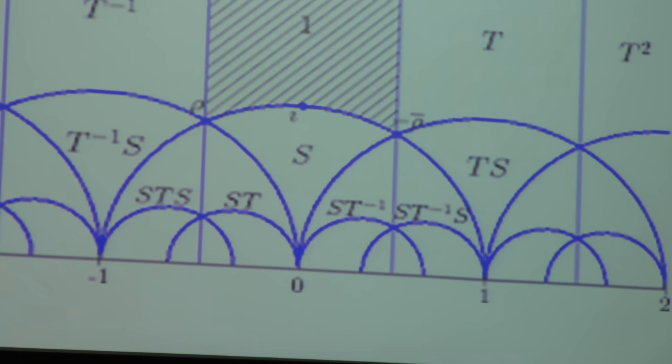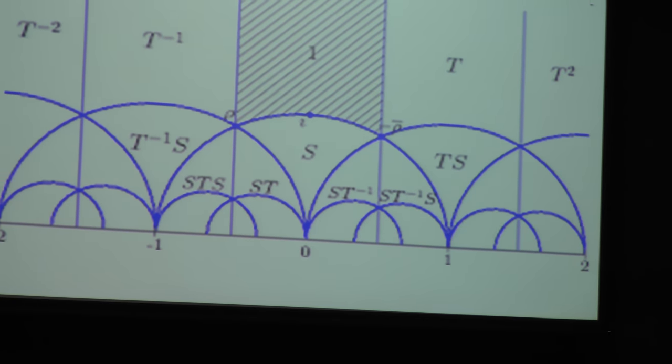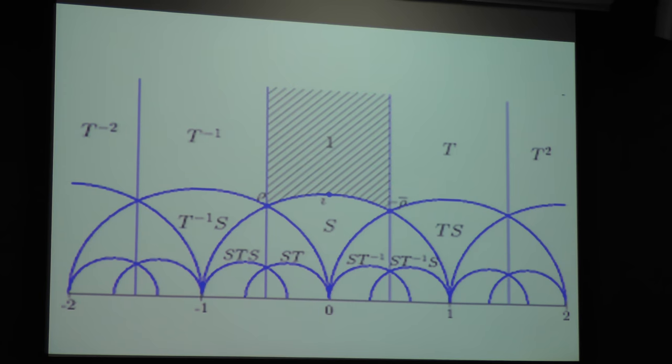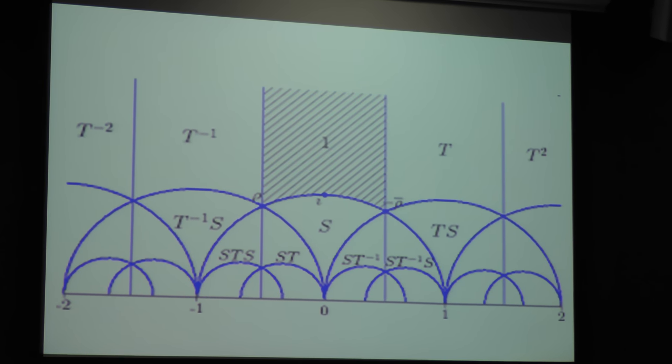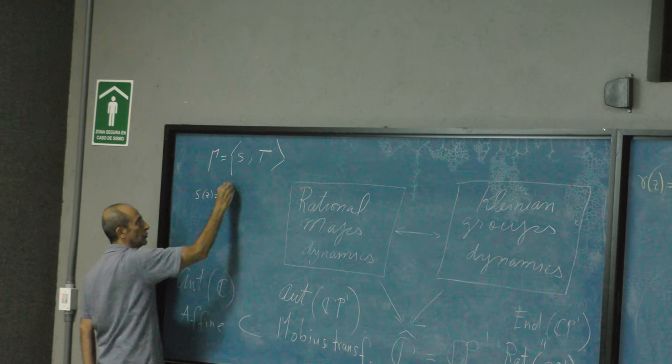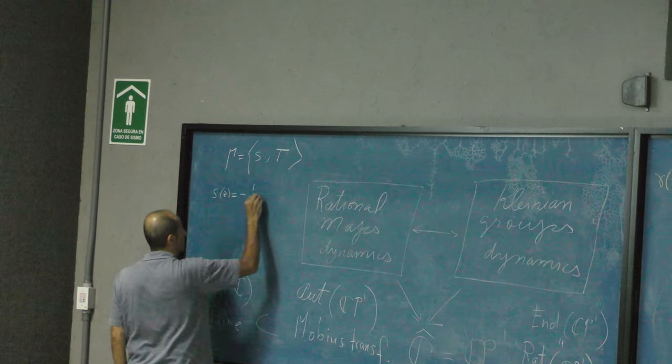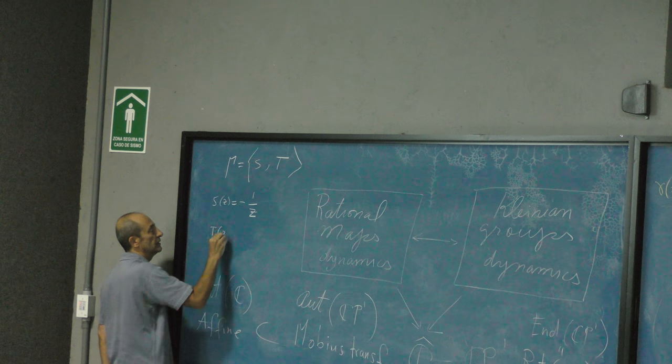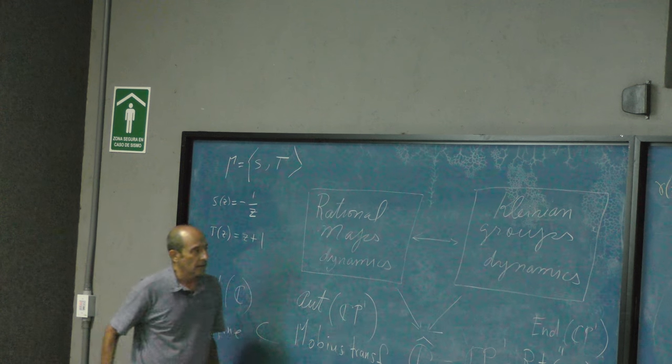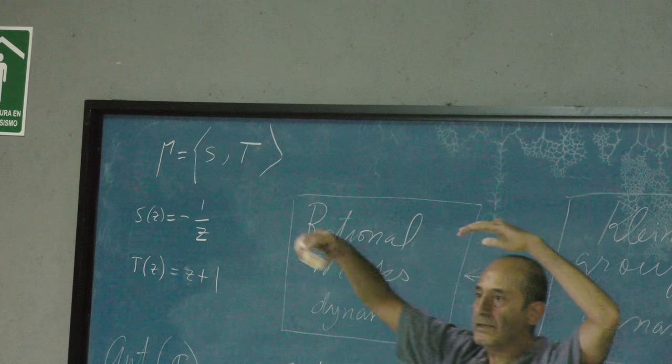This is another famous subgroup, which is the modular group, generated by two elements S and T. S of z is equal to minus 1 over z, and T of z is z plus 1. Yes. This disc is upper plane. If you compactify, add infinity, you obtain this object. But this is to represent the translation. This band here goes to this, goes to this. And it's like a rotation. One over z is inversion, and minus one over z is the inversion.